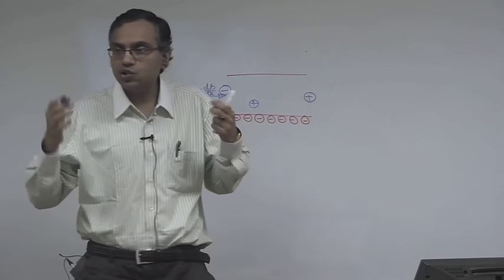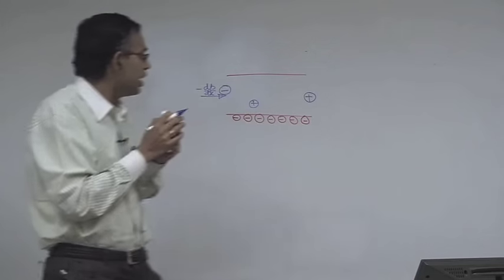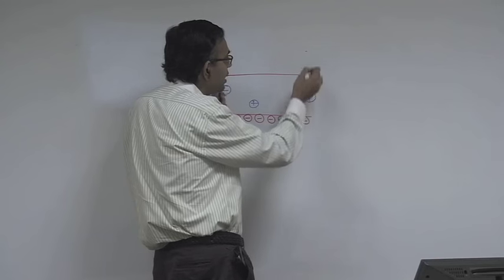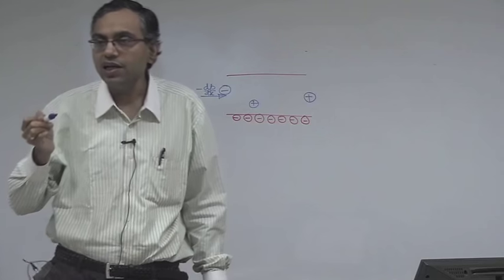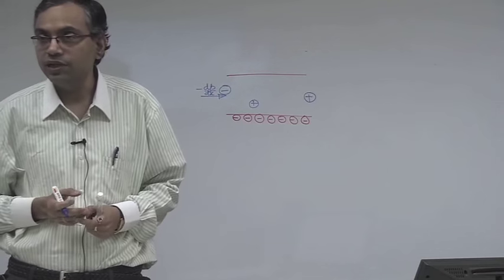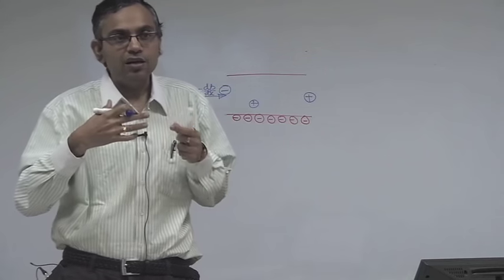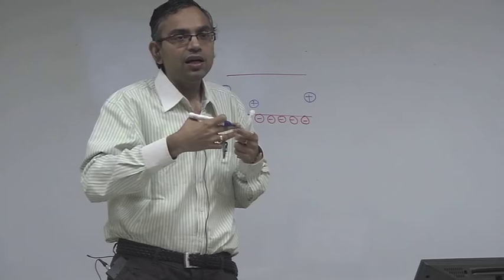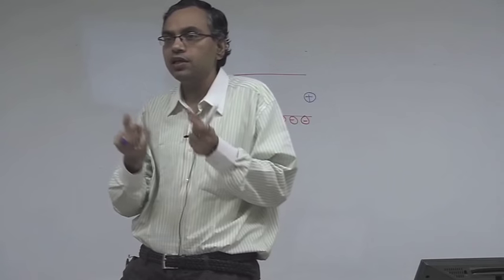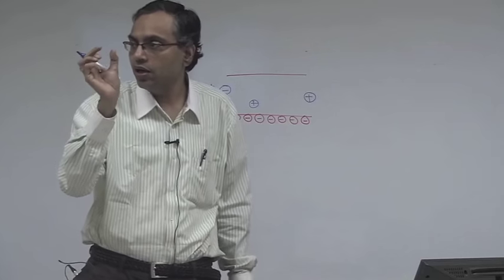Why is streaming potential so important in microfluidics? There are many applications, but in microfluidics you can connect this potential with an external resistor, and if you have an external resistor this potential will make a current flow through it. That means you have converted hydraulic energy to electrical energy. You can use it as an energy conversion device - if you embed this in a small chip then you can have something called a power plant on a chip, a small hydroelectric power plant on a chip.